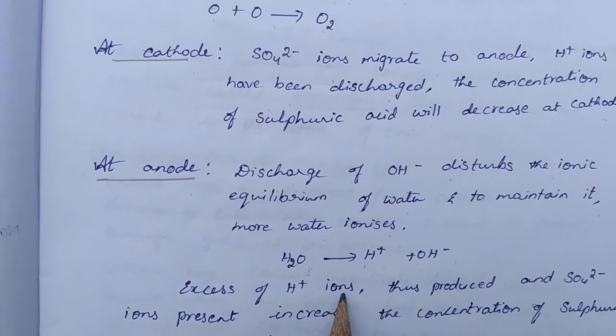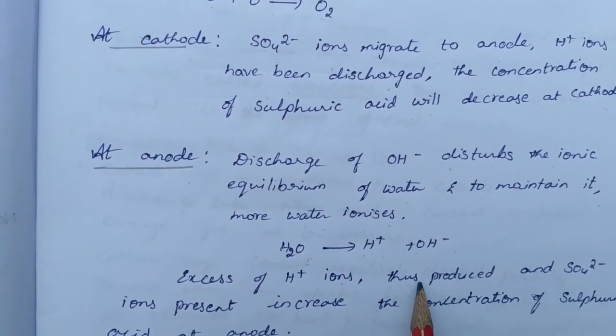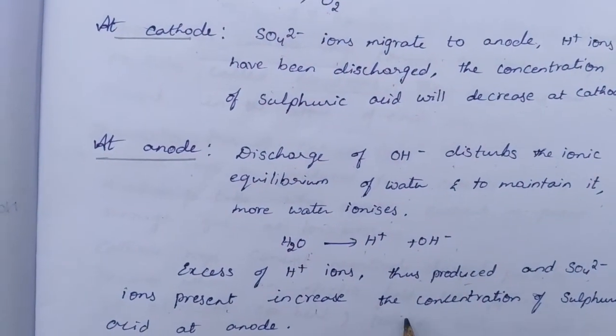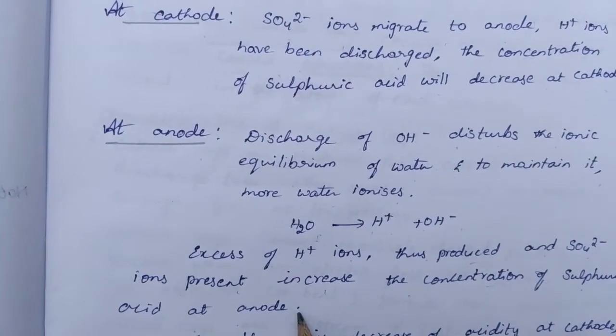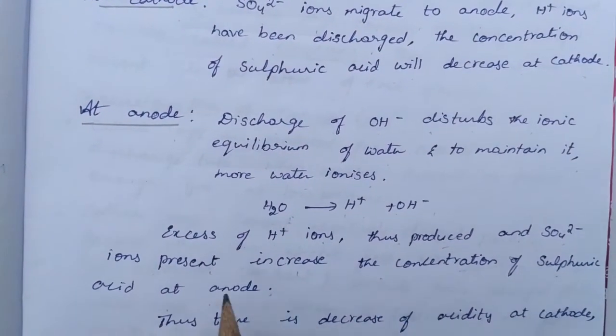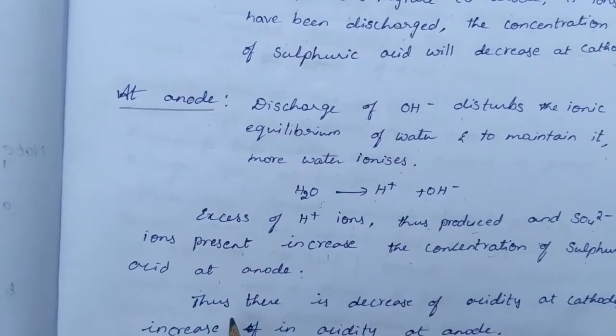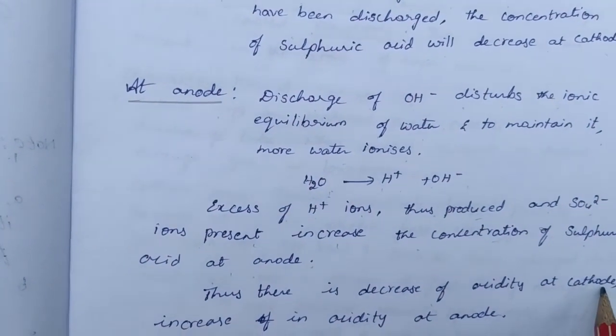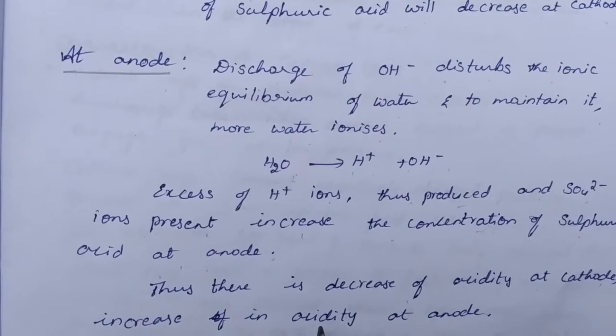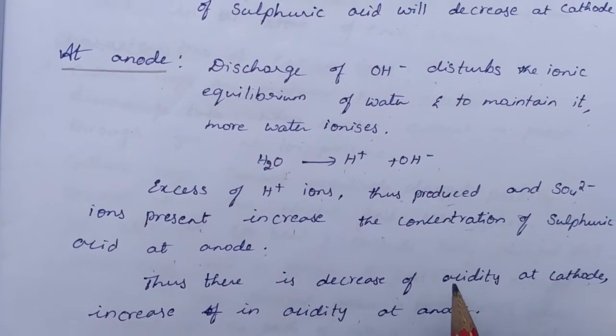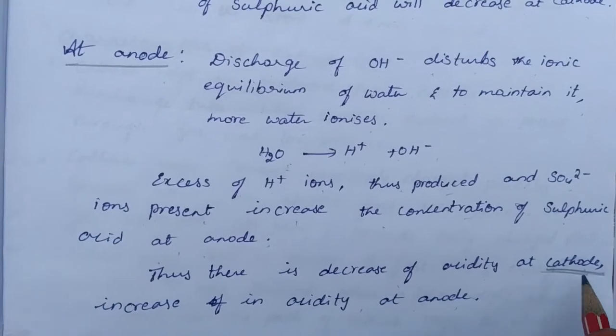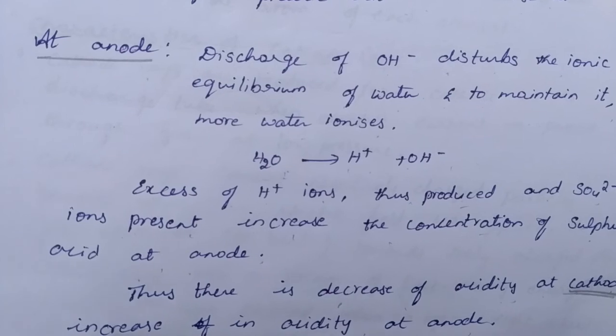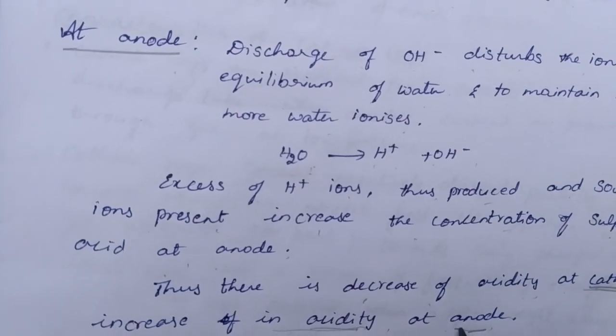Excess H+ ions thus produced and sulfate ions present increase the concentration of sulfuric acid at anode. At anode, the concentration of sulfuric acid will be increased. Thus, there is a decrease of acidity at cathode and an increase in acidity at anode. At cathode, the acid character will be decreased, and there will be an increase of acidity at anode.